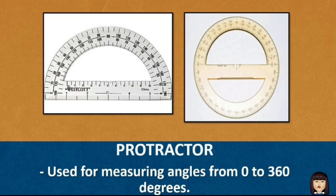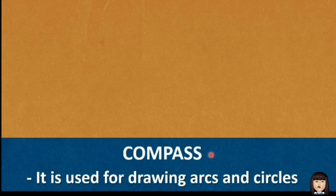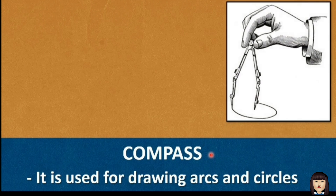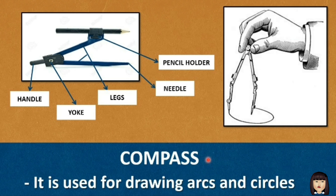The protractor is used for measuring angles from 0 to 360 degrees. The compass is used for drawing arcs and circles. The compass has five parts: the handle, the yoke, the legs, the needle, and the pencil holder.